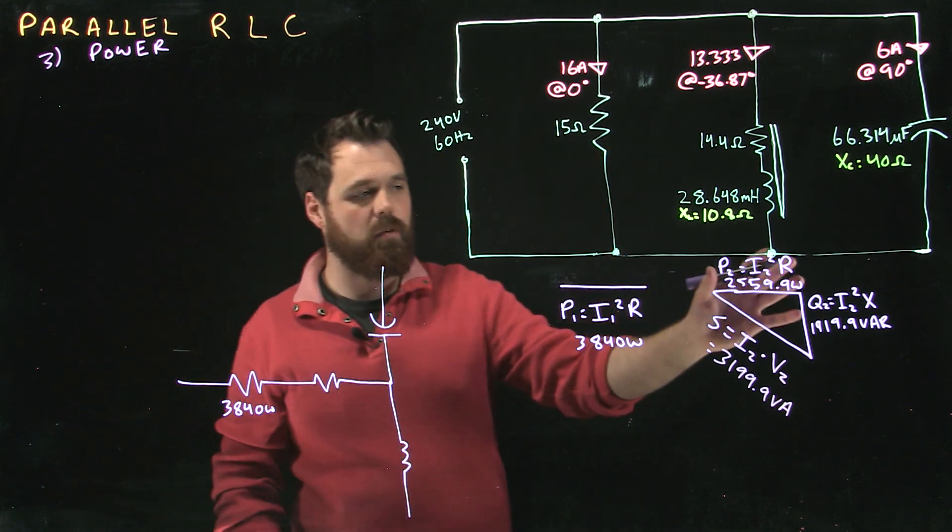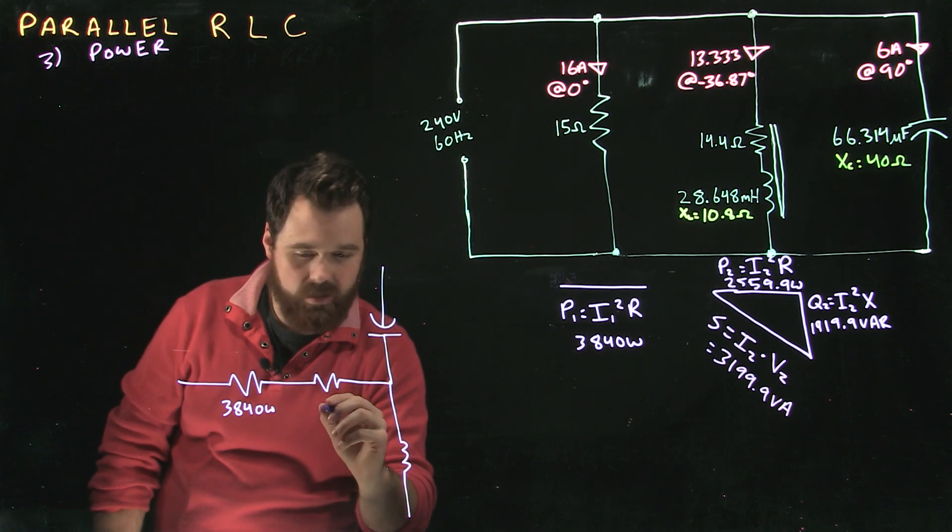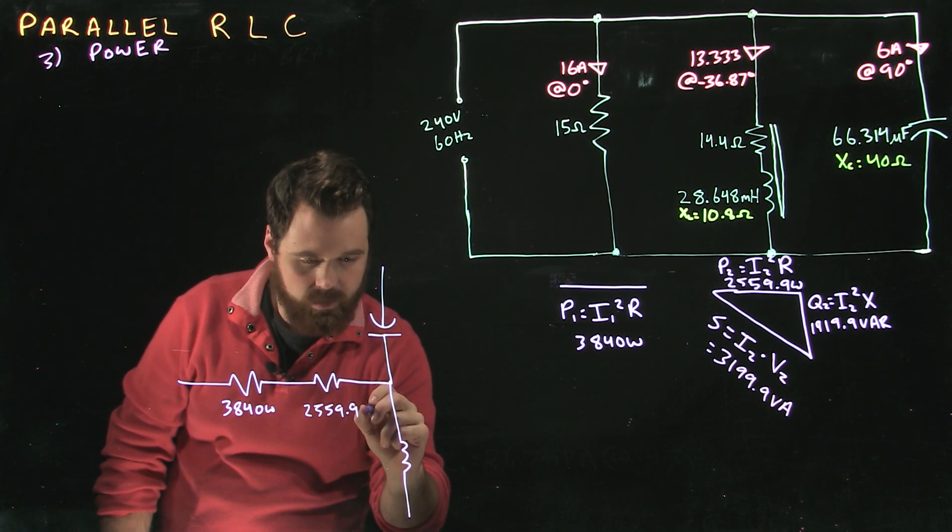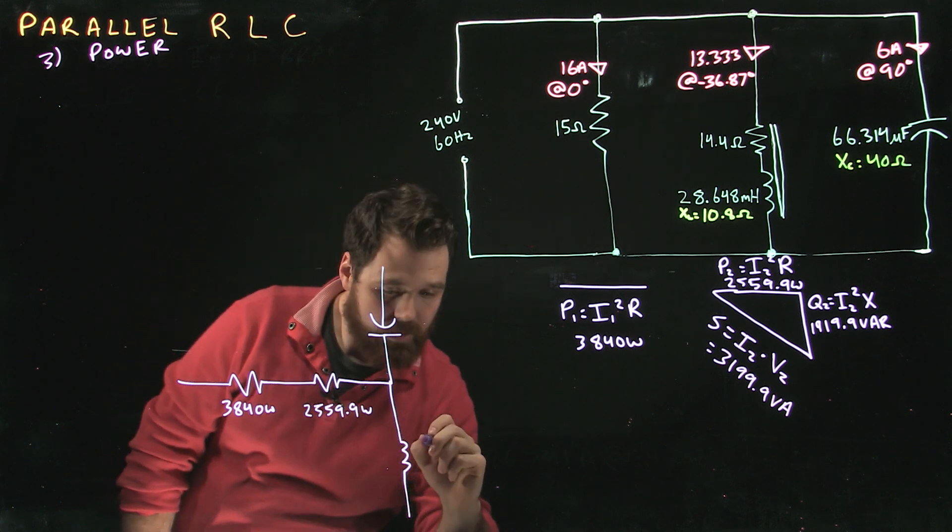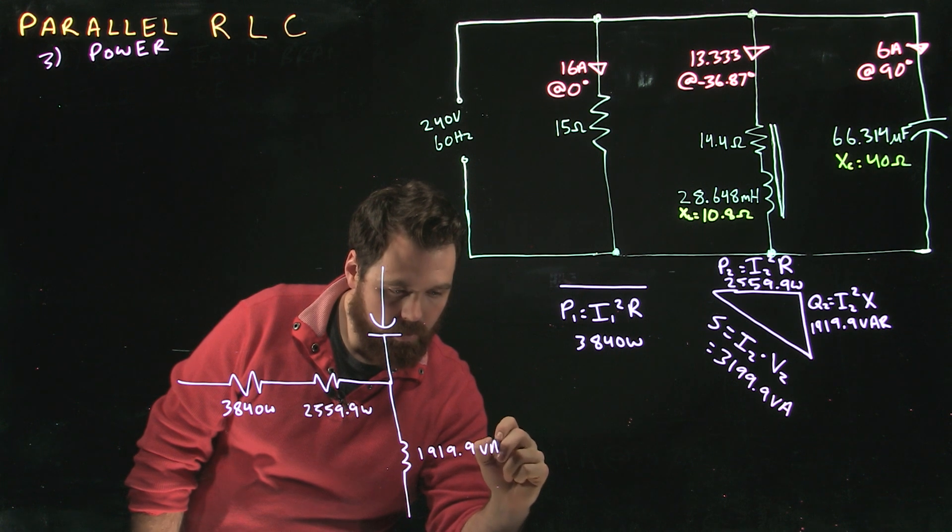So I can take my horizontal value and my vertical value, and I can come put them over here. I got 2559.9 watts, and I got 1919.9 Vars.